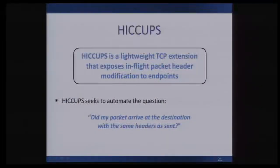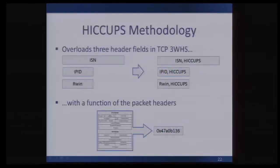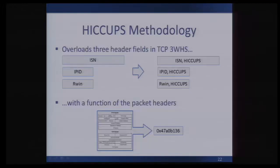Our solution that meets each of these challenges is Hiccups, a lightweight TCP extension that exposes in-flight packet header modification to endpoints. Essentially we're automating the question: did my packets arrive at the destination with the same headers as sent? The idea is to detect middleboxes making changes so TCP can determine whether it's being misinterpreted without interfering with the good middleboxes. At a high level, Hiccups works by overloading three header fields out of the three-way handshake: the initial sequence number, the initial IP ID, and the initial receive window — each overloaded with a function of the packet headers.